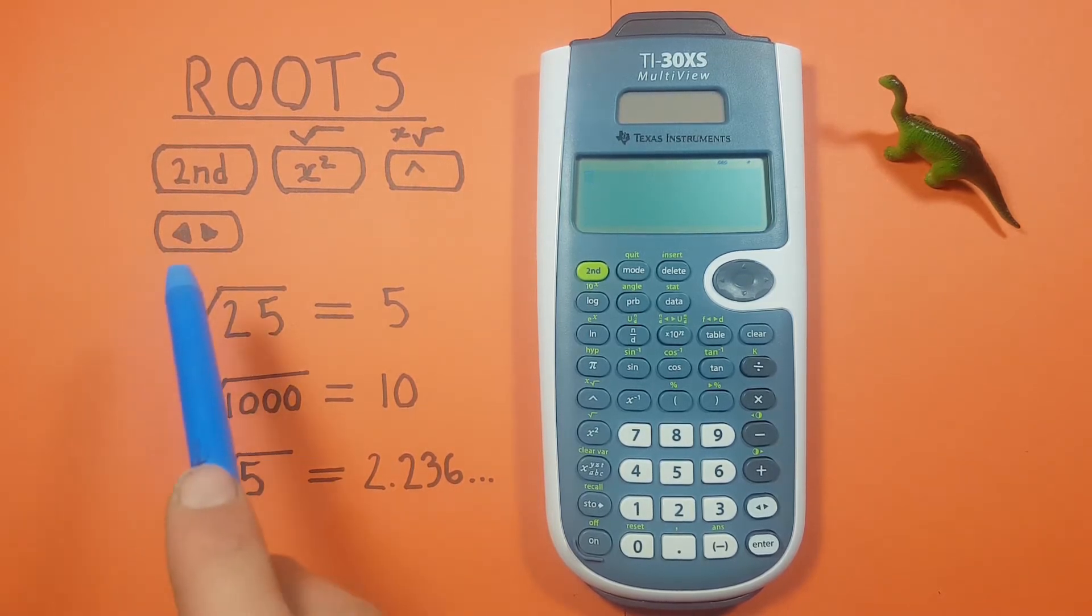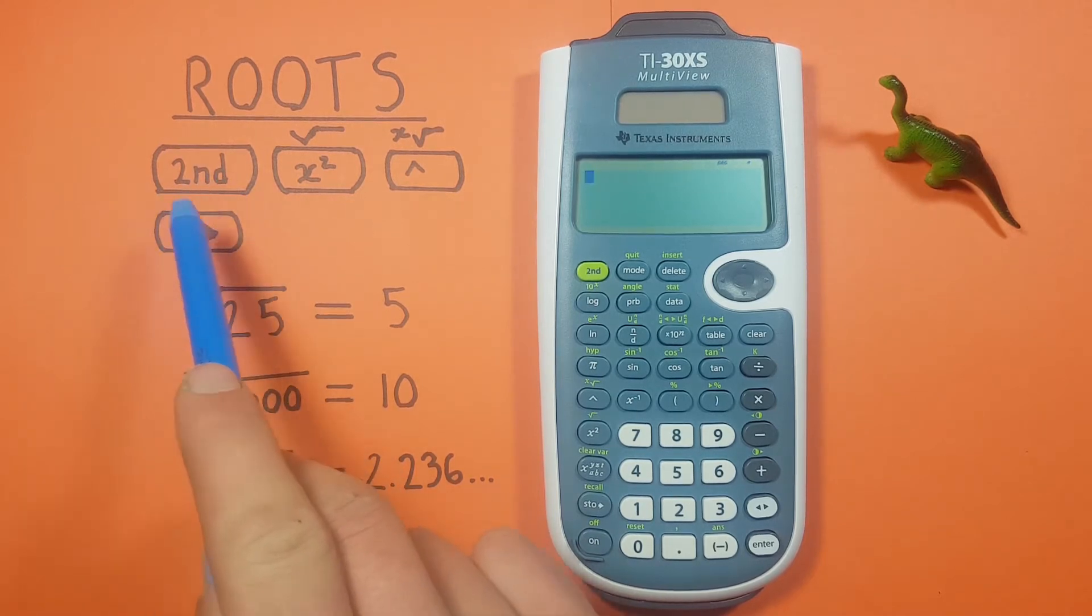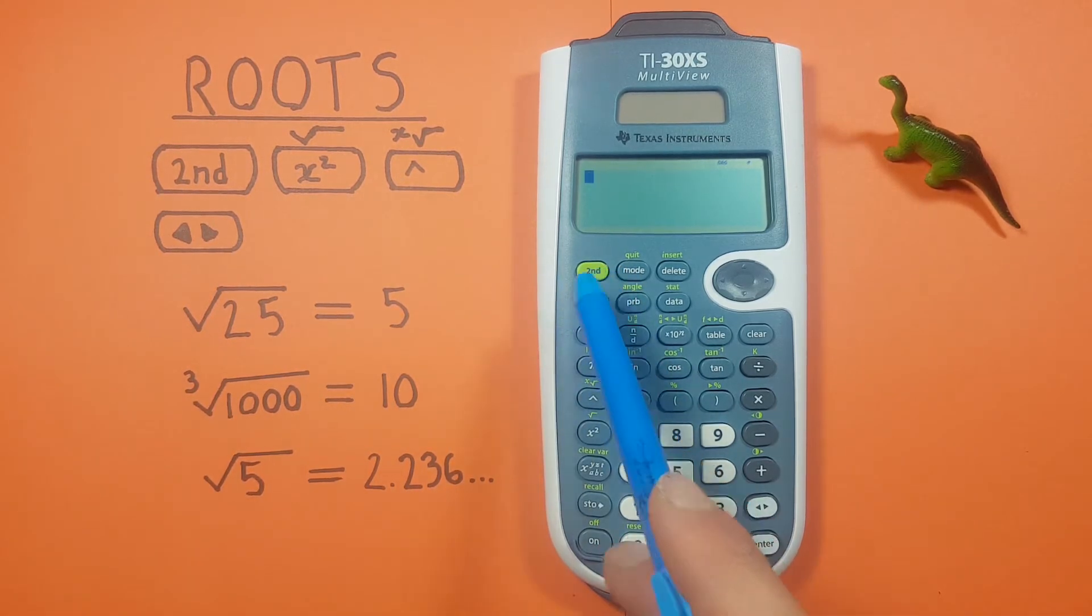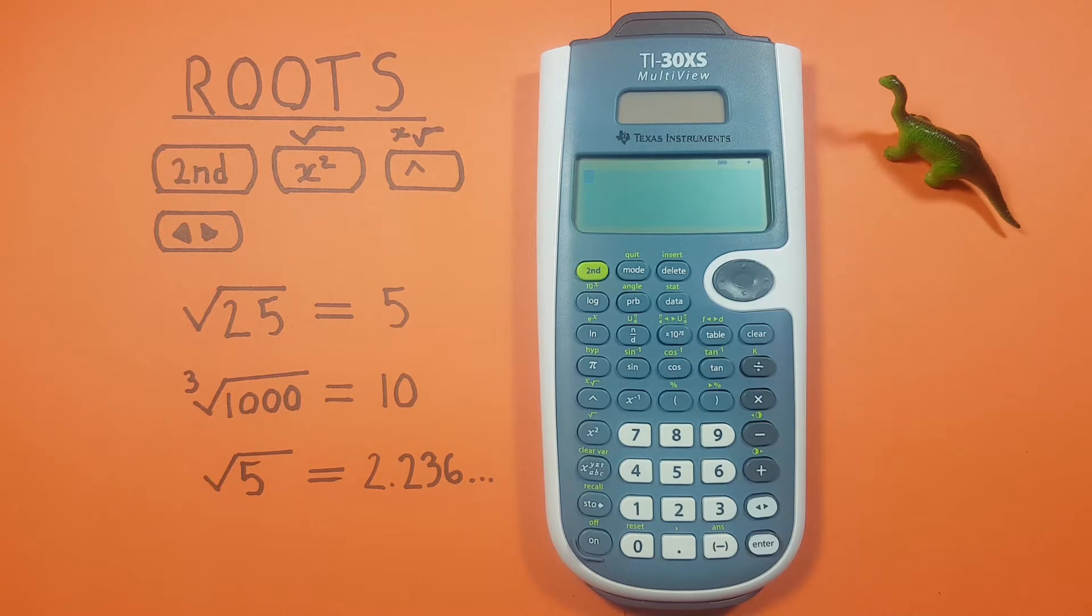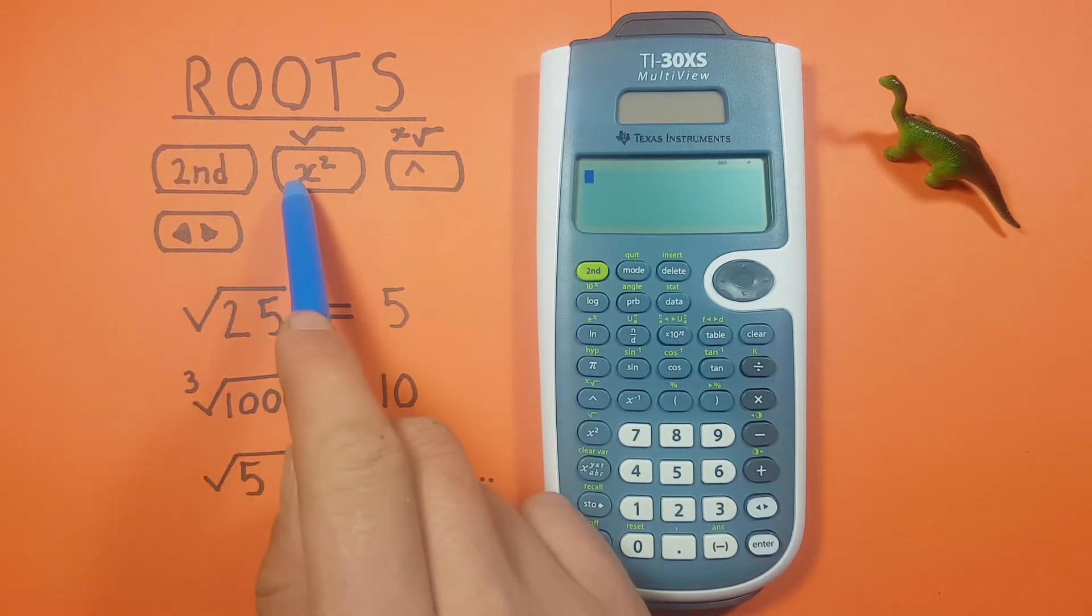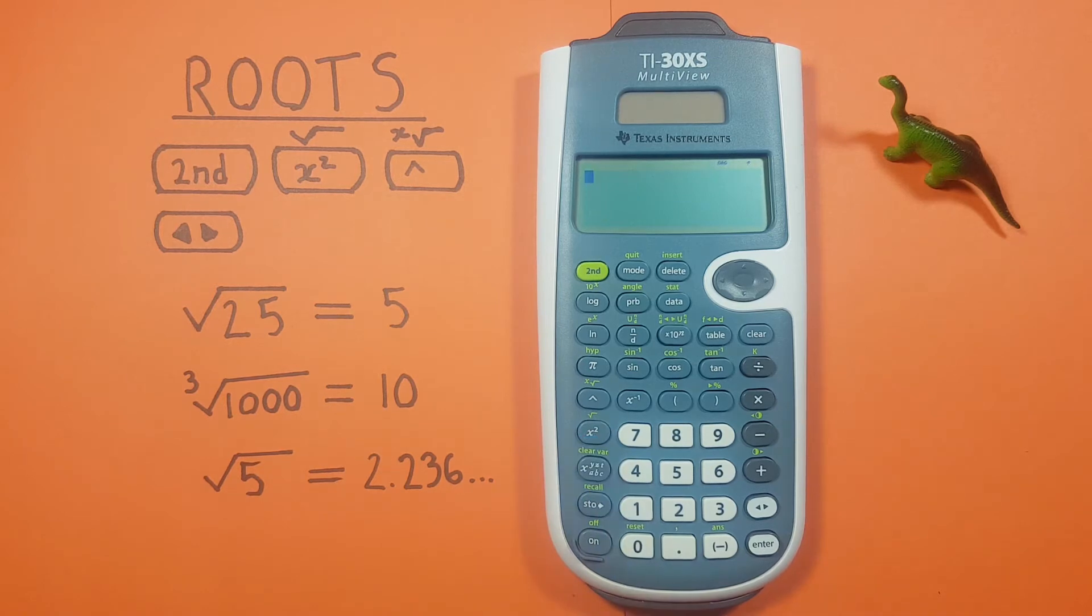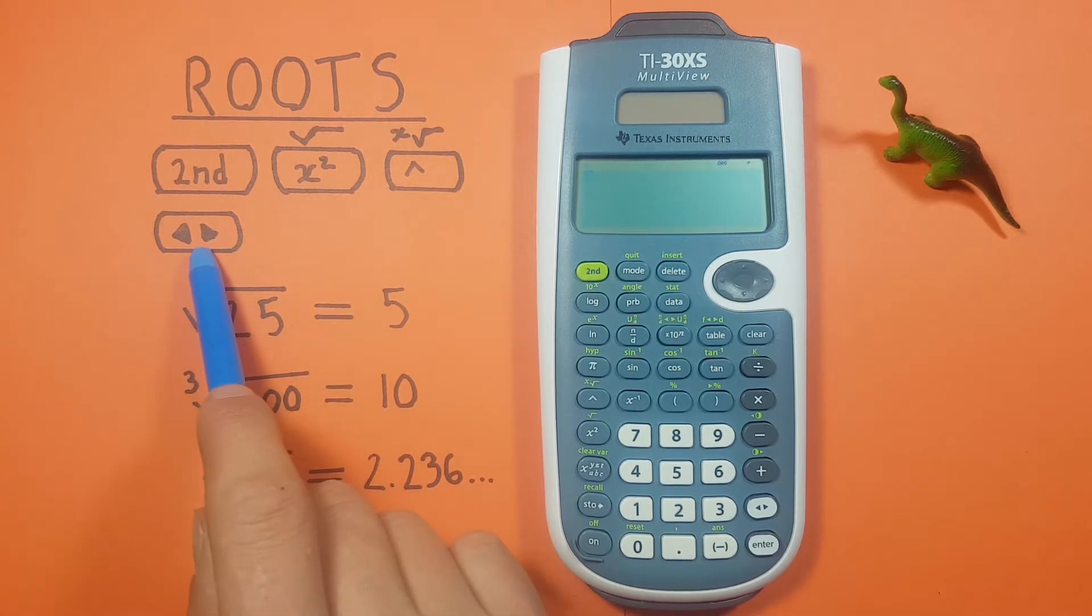To do this we'll be using the second function key that looks like this located here, this green one. The x squared key with the second function of square root looks like this located here. The caret key with the second function of x root looks like this located here, and we'll use the toggle key that looks like this, two arrows going left and right, located down here.